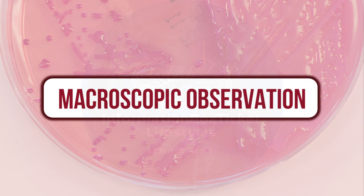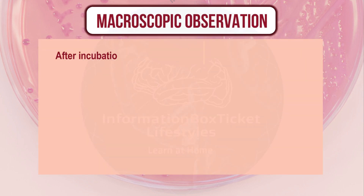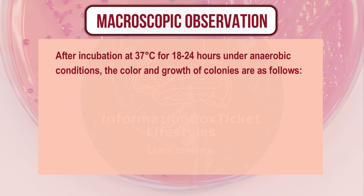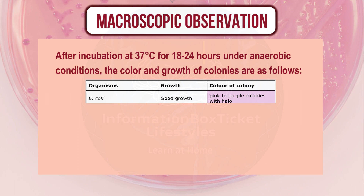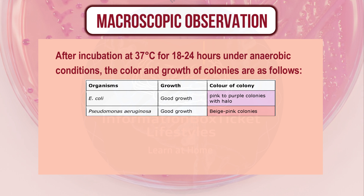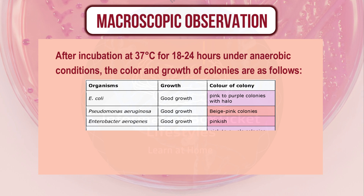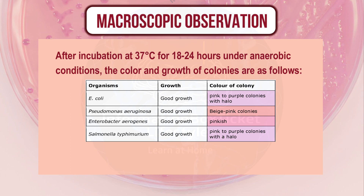Macroscopic Observation on VRBL agar: After incubating at 37°C for 18–24 hours under anaerobic conditions, distinct characteristics were observed. E. coli displayed robust growth, forming pink to purple colonies surrounded by a halo. Pseudomonas aeruginosa appeared as beige-pink colonies. Enterobacter aerogenes colonies were distinctly pinkish. Salmonella typhimurium exhibited vigorous growth with pink to purple colonies and halos.